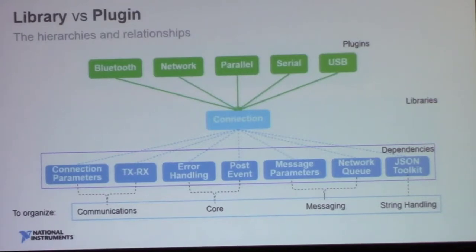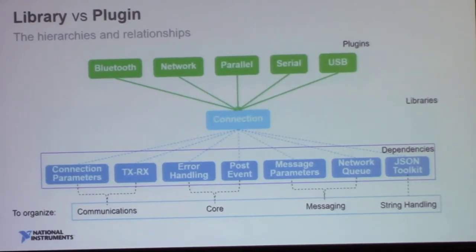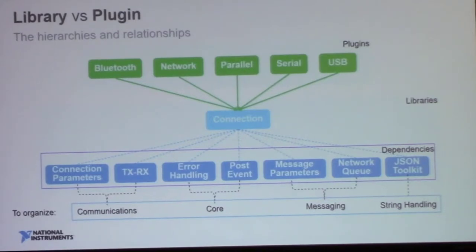This is a very generic object-oriented concept for our design. Our libraries — taking connection as an example — we have five plugins for different types of interfaces. We definitely have some dependencies supporting the features or internal functionalities. We want to categorize those dependencies into sub-areas so that either in the file system or in the class hierarchy we can have a better organization of the code. You'll see more in detail how this works out in the next few slides.